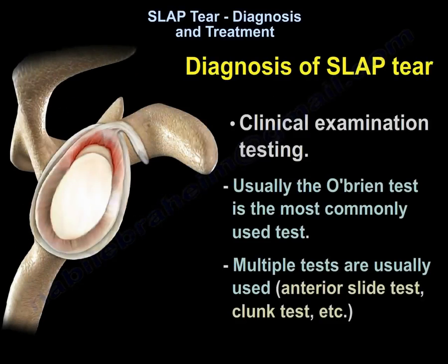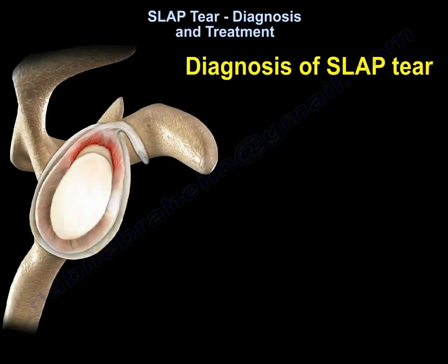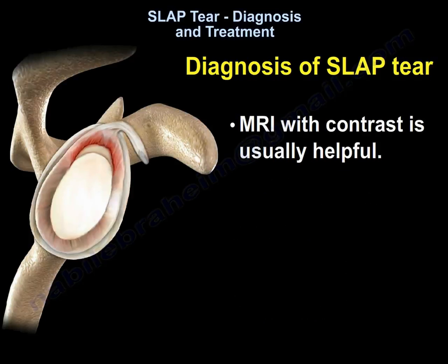Diagnosis of a SLAP tear involves clinical examination testing. Usually the O'Brien test is the most commonly used test, though multiple tests are typically used, including the anterior slide test, clunk test, and others. MRI with contrast is usually helpful.